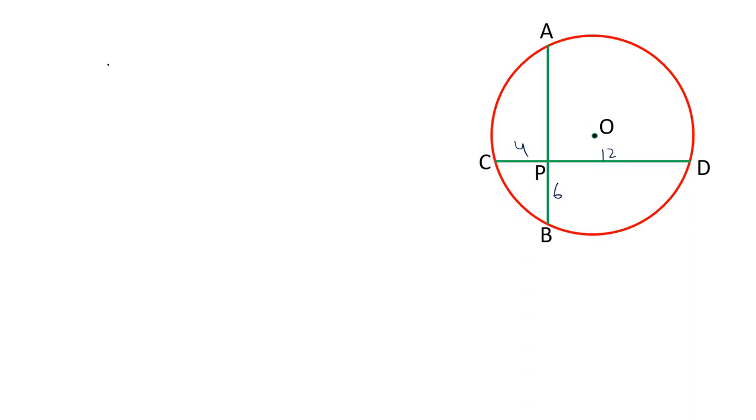Now, in a circle, there is a property which you should remember and that property is if there are two chords intersecting at a point, then the product of the segments are equal.